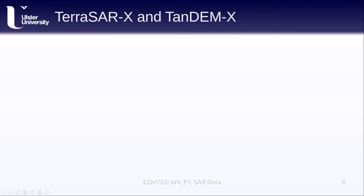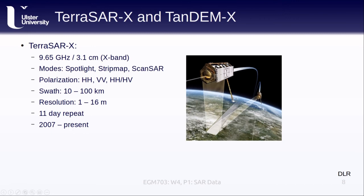Changing frequencies once again, we'll take a look at TerraSAR-X and TandemX, which are operated by the German Aerospace Agency, DLR. TerraSAR-X operates at 9.65 gigahertz, or 3.1 centimeters, so this is an X-band radar, as you can hopefully guess from the name. TerraSAR-X operates in a number of different strip map, spotlight, and scansar modes, and it acquires both horizontally and vertically polarized signals, as well as cross-polarized signals. The swath width ranges from 10 to 100 kilometers, with a resolution that varies between 1 and 16 meters, depending on the acquisition mode. TerraSAR-X has an 11-day repeat cycle, and has been in operation since 2007.